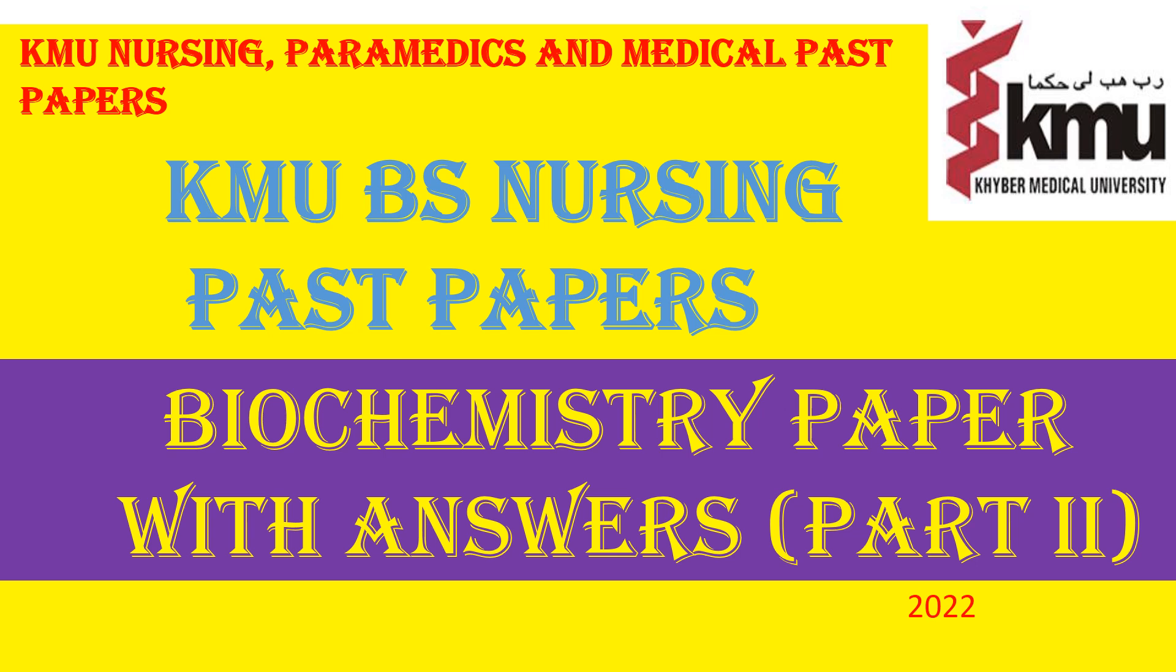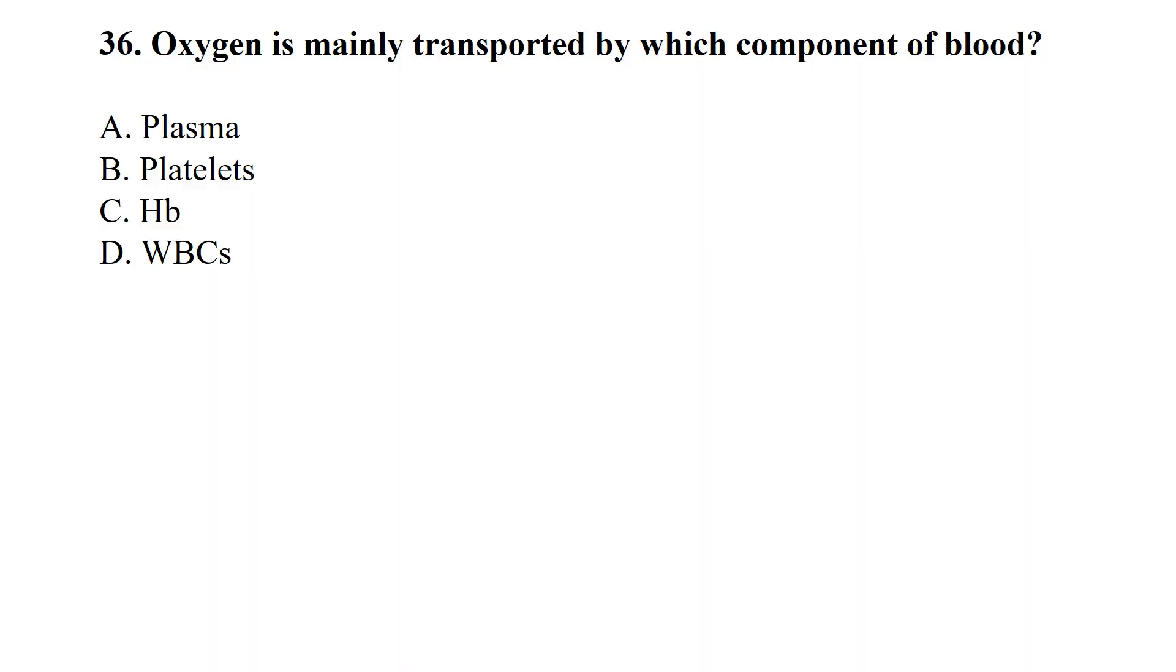MCQ number 36: Oxygen is mainly transported by which component of the blood - plasma, platelets, hemoglobin, or white blood cells? So it is specifically by hemoglobin that is found in the erythrocytes.